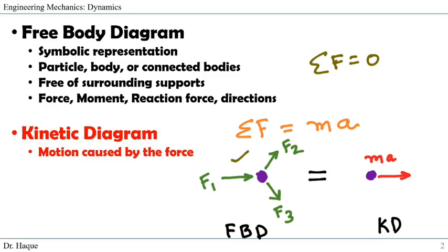The free body diagram helps us understand the forces acting on a body, while the kinetic diagram helps us understand the motion or resultant caused by those forces. In this example, forces F1, F2, and F3 cause the particle to gain some acceleration. The kinetic diagram would show ma — the particle moving to the right with acceleration a.